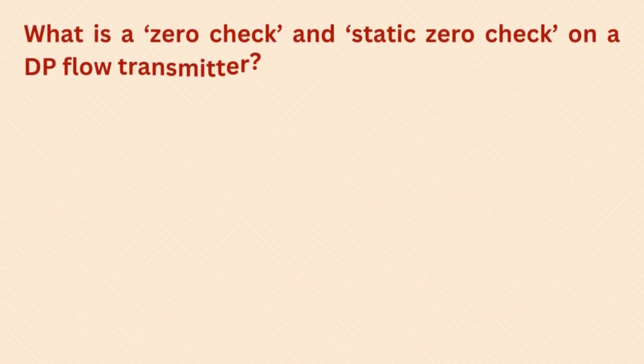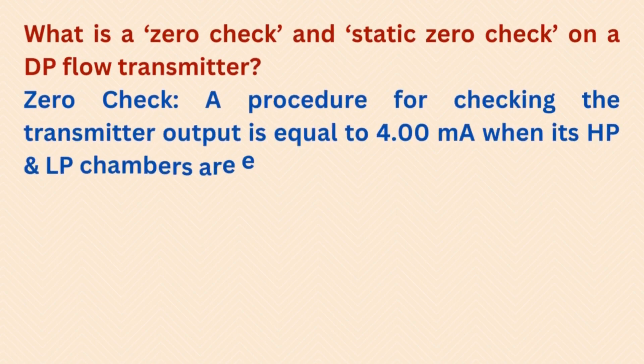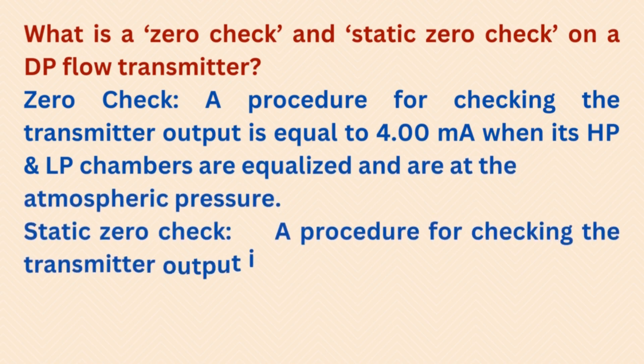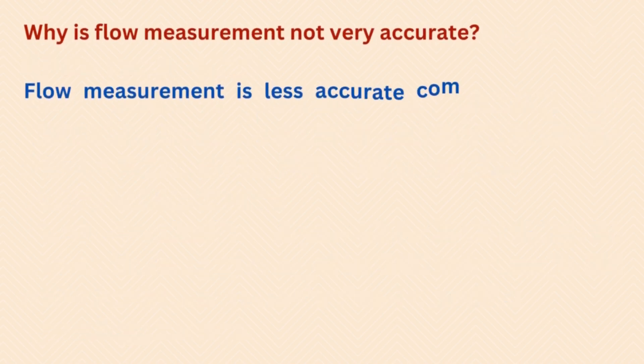What is a zero check and static zero check on a DP flow transmitter? Zero check is a procedure for checking that the transmitter output is equal to 4.00 milliampere when its HP and LP chambers are equalized and are at atmospheric pressure. Static zero check is a procedure for checking that the transmitter output is equal to 4.00 milliampere when its HP and LP chambers are equalized and are at operating pressure.